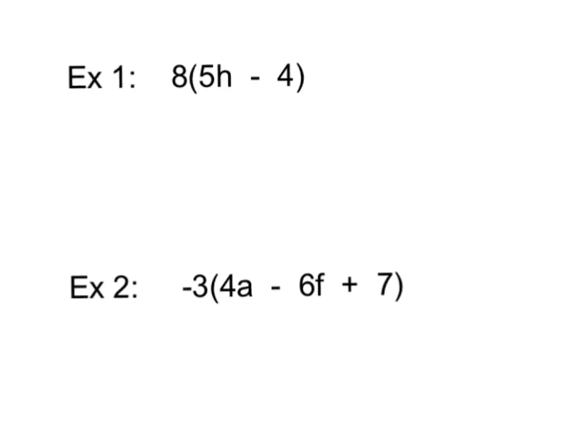Please write example 1 into your notes right now. Now I am a visual learner, so what we're going to do is we are going to distribute the 8 into the difference that's in the parentheses, 5H minus 4. Because I'm a visual learner, I like to draw a little arrow from my 8 to my 5H. That helps me know to multiply them. That's going to give me 40H.